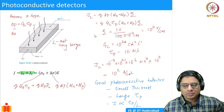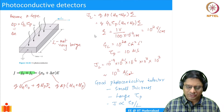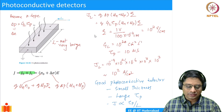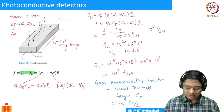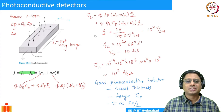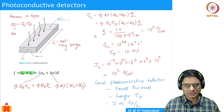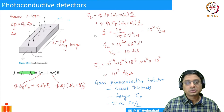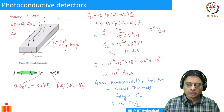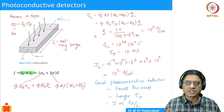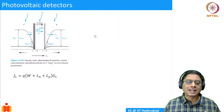Photoconductive detectors are good, and used for high-speed applications, but they are difficult to design. For some applications, we can use another mechanism to build photodetectors. If you make the thickness very small, you're not generating sufficient electron-hole pairs because photon absorption will also be small. So we extend this concept — instead of a simple piece of silicon, we build a detector out of a p-n junction. These are called photovoltaic detectors.